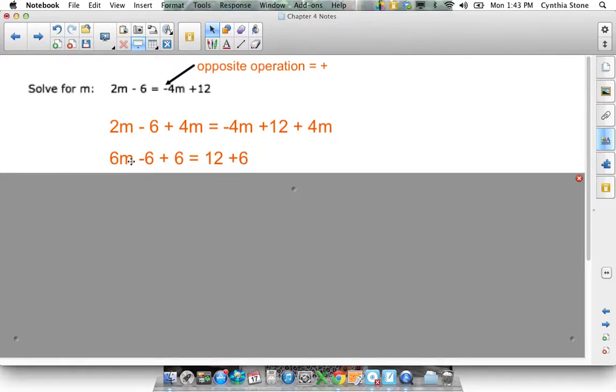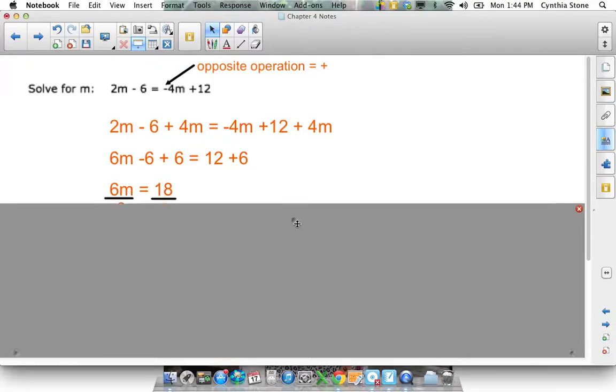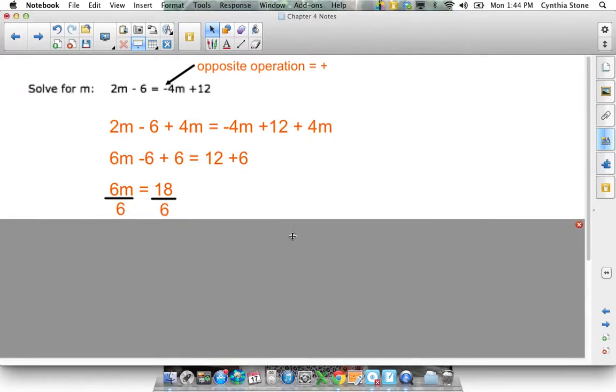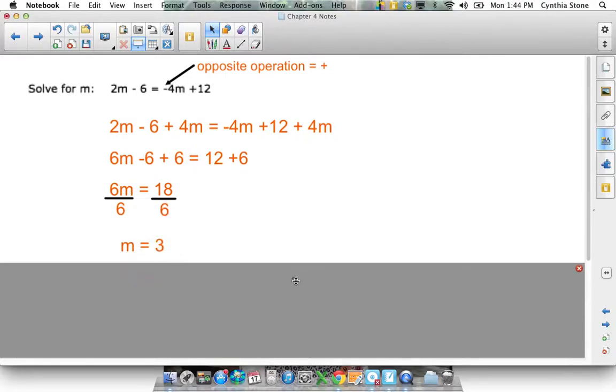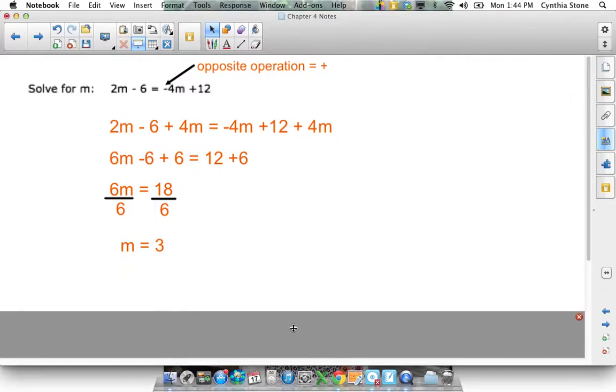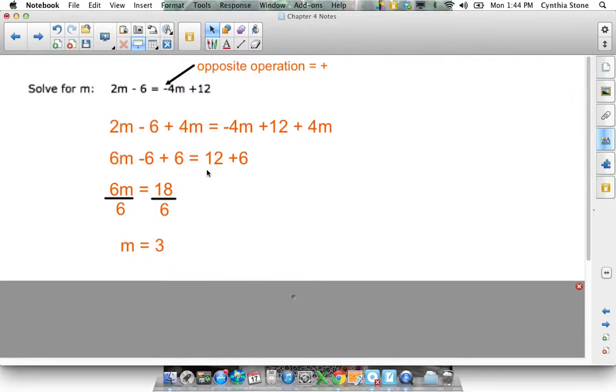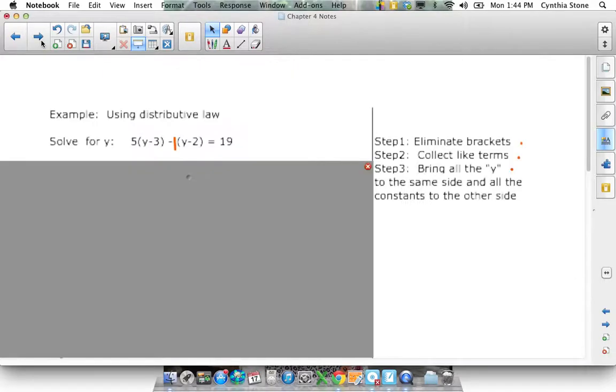So 2M plus 4M is 6M. And then minus 6, I'm going to add 6 to both sides. You end up with 6M equals 18. If M is multiplied by 6, I need to divide both sides by 6. And you end up with M equals 3. That's just doing another harder, more than 2-step equation.